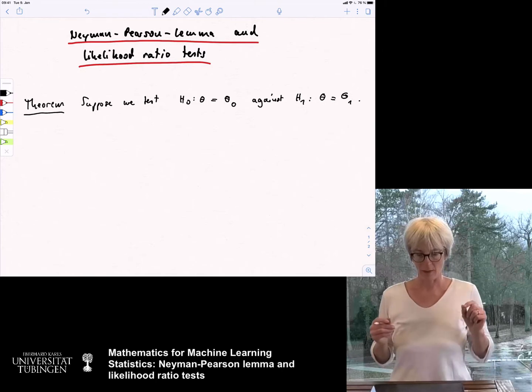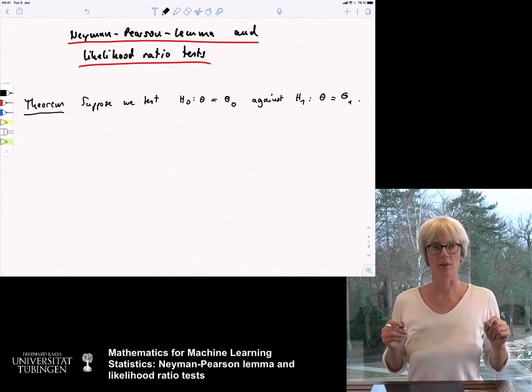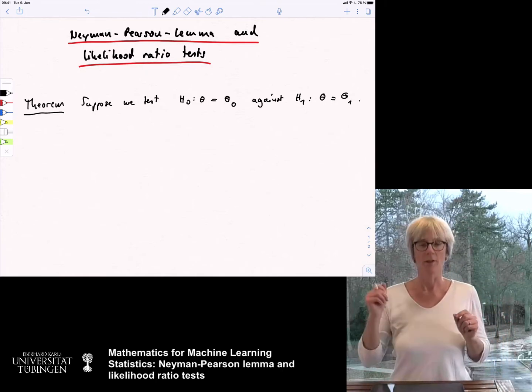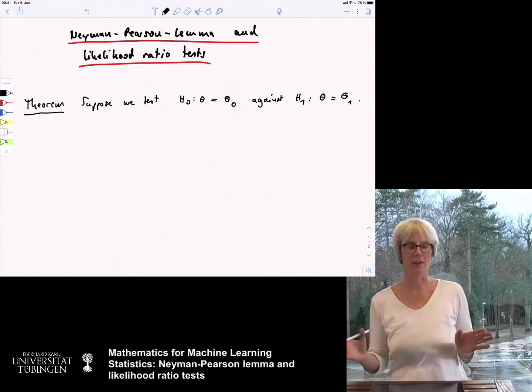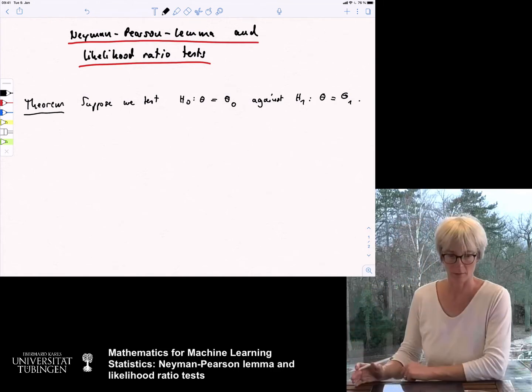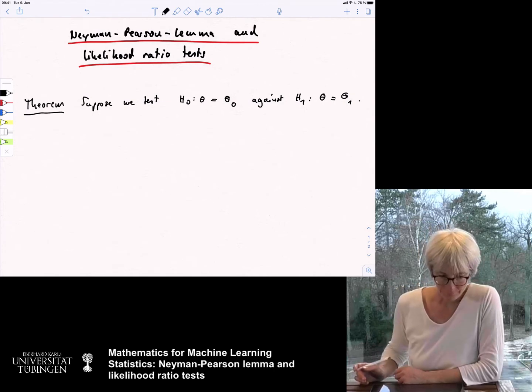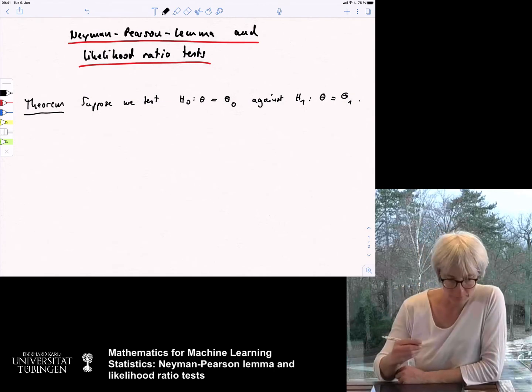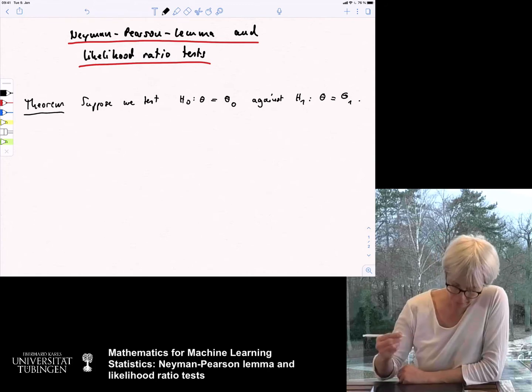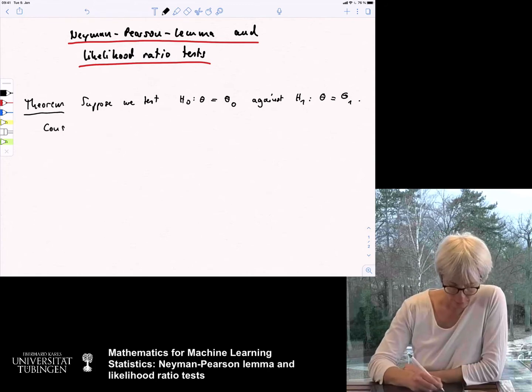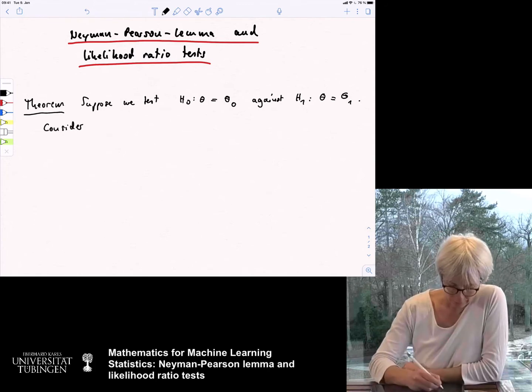A hypothesis is called simple if it just contains one parameter. So, we just have either the parameter is theta 0, or the parameter is theta 1. There is nothing else. These are the two cases that we consider. And now, consider the test statistic.